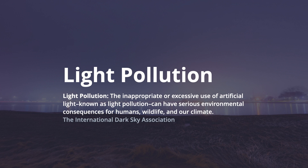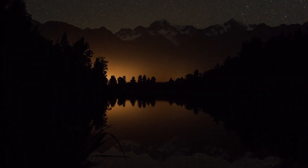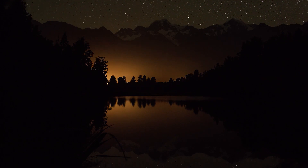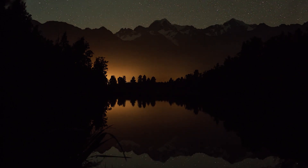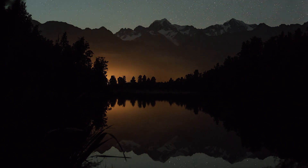The International Dark Sky Association defines light pollution as the inappropriate or excessive use of artificial light that can have serious environmental consequences for humans, wildlife and our climate. So who were the first people that noticed that light pollution was an issue and that the excess lighting of our streets and in our homes are really creating an emerging problem?